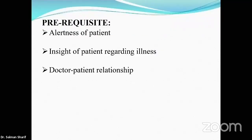Before you start the history, it's important to know how alert your patient is, because a neurological history needs an alert patient. You need to have consent from the patient and the family, and insight — for example, if a patient is having seizures, is he the right person to talk about his symptoms? There's also the issue of confidentiality.